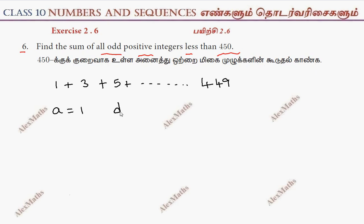A is 1, D is 2nd term minus 1st term which is 2, and last term L is equal to 449.